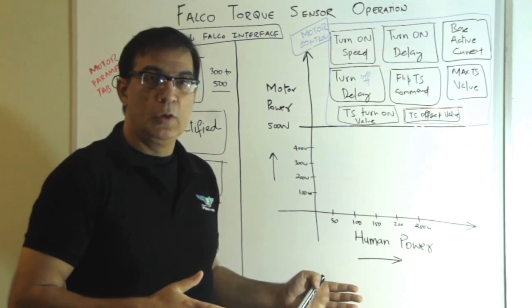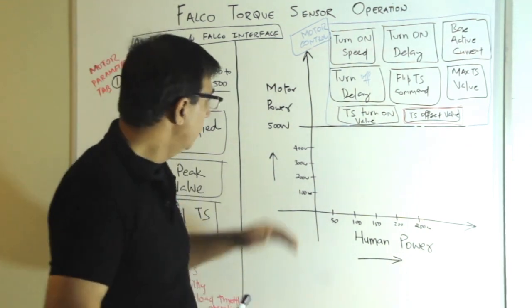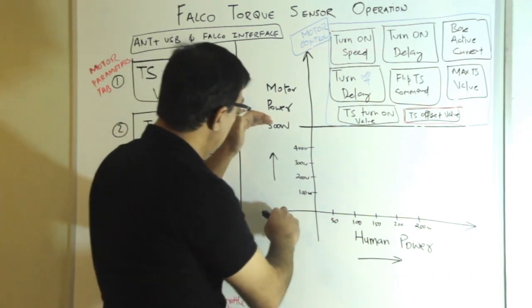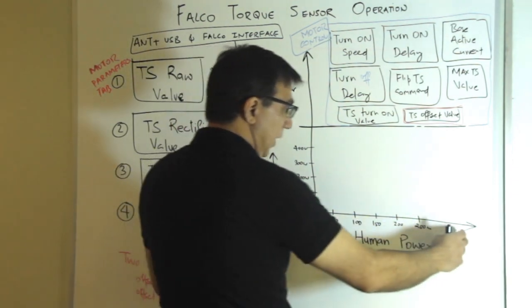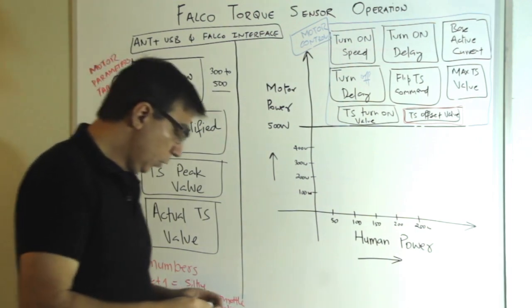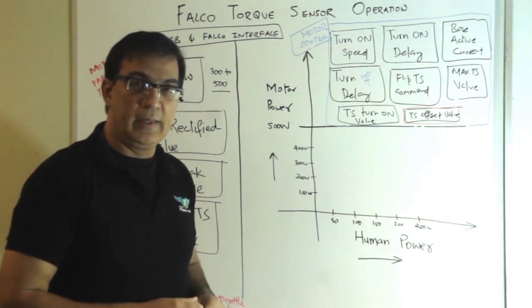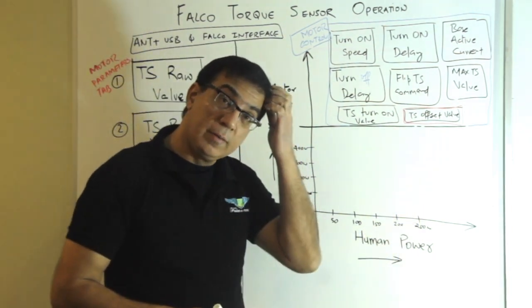To match human power to motor power. Let's talk about over 500 watt motor power. This is 500 watt motor power on the Y axis, and then on X axis, let's say plot human power. If you are a fit athlete and let's say that you can produce 250 watt of power.